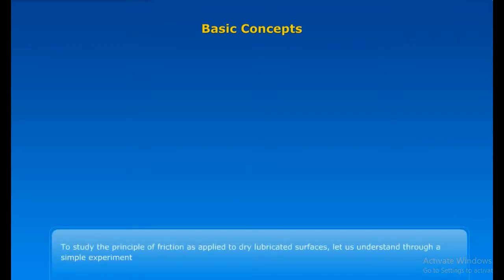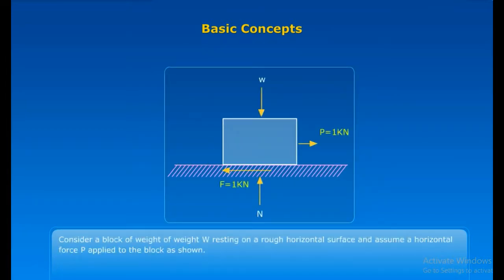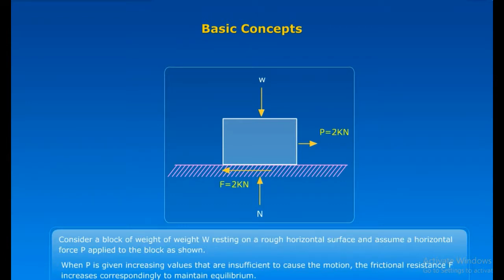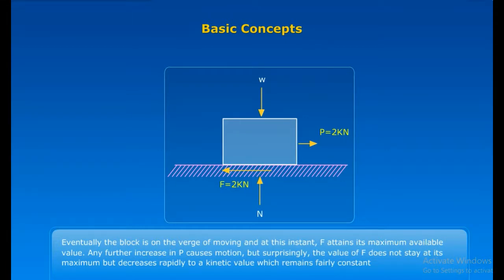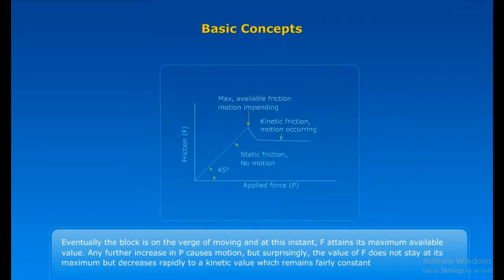Let us understand the few basic concepts which will help to understand friction. To study the principle of friction as applied to dry lubricated surfaces, let us understand through a simple experiment. Consider a block of weight W resting on a rough horizontal surface and assume a horizontal force P applied to the block as shown in the figure. When P is given increasing values that are insufficient to cause the motion, the frictional resistance F increases correspondingly to maintain equilibrium. Eventually, the block is on the verge of moving, and at this instant, F attains its maximum available value. Any further increase in P causes motion. But surprisingly, the value of F does not stay at its maximum but decreases rapidly to a kinetic value which remains fairly constant.